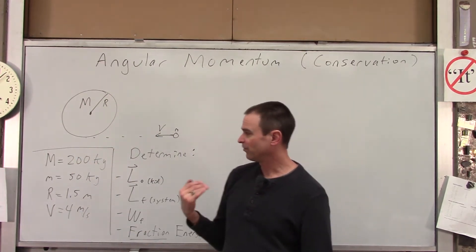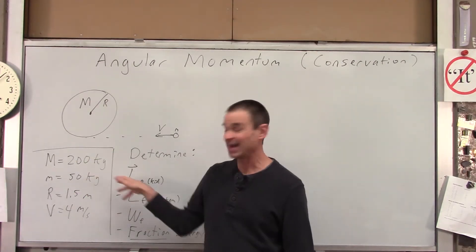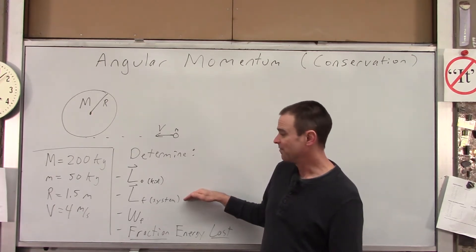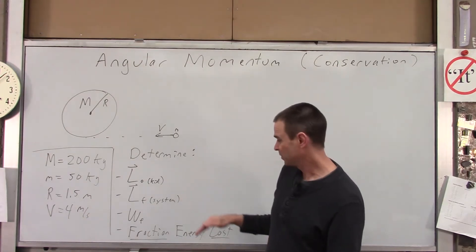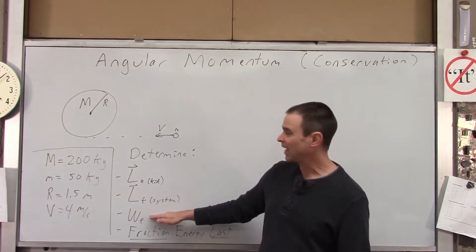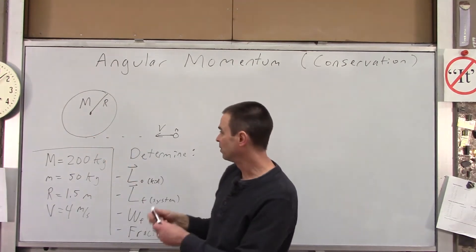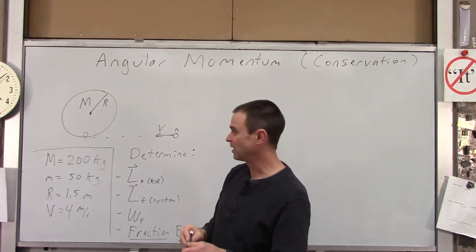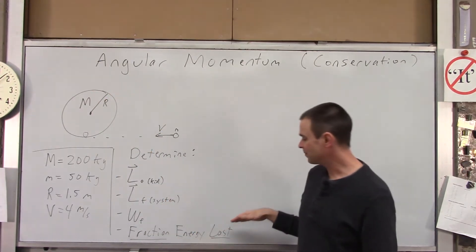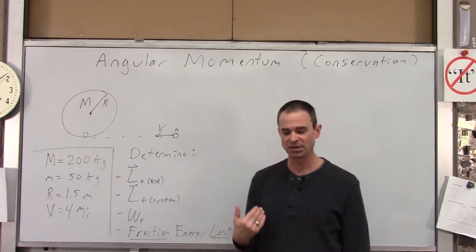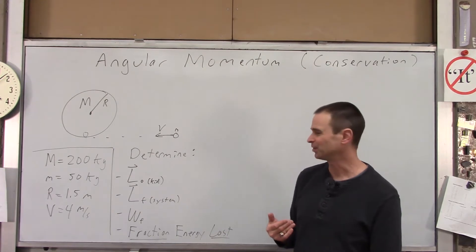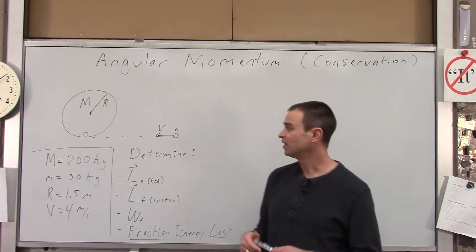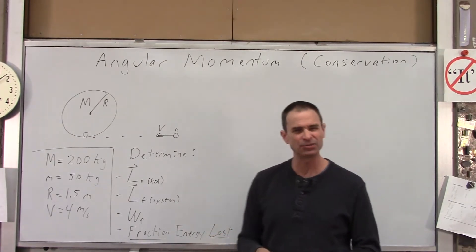We're going to determine four things, both in terms of variables and numbers: the initial angular momentum of the kid, the final angular momentum of our system, the final angular velocity of the kid-merry-go-round system once the kid jumps on and they rotate together, and finally what fraction of the total mechanical energy was lost in this collision — because we have an inelastic collision, and in inelastic collisions you lose some energy.